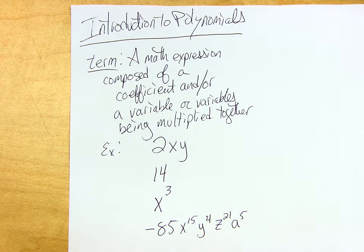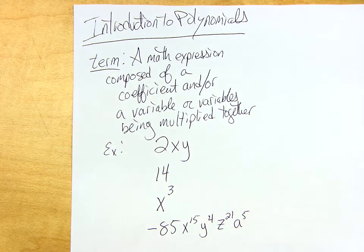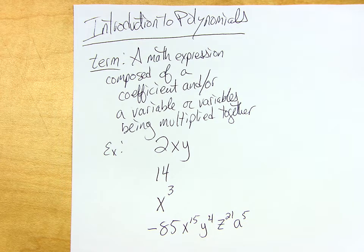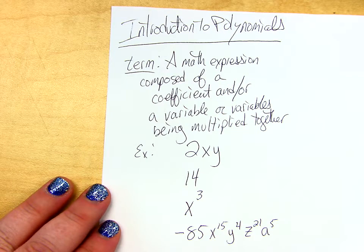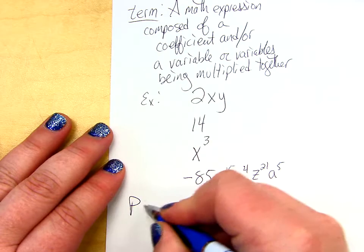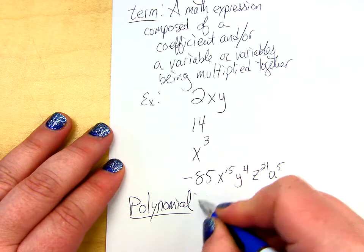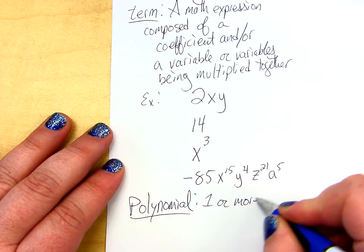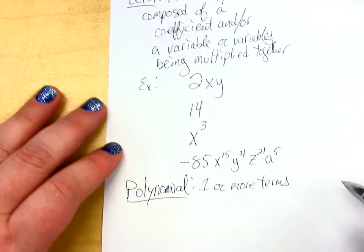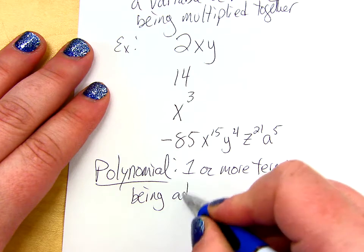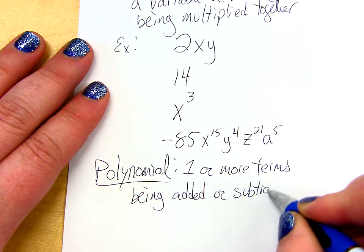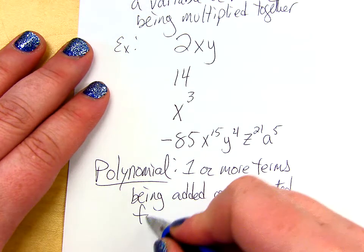Okay. So, that's a term. So, then a polynomial is just a string of one or more of these terms by addition or subtraction. So, I just would link them all together. So, if I added all these together, I would have a four-term polynomial. Okay? So, and then we classify polynomials.